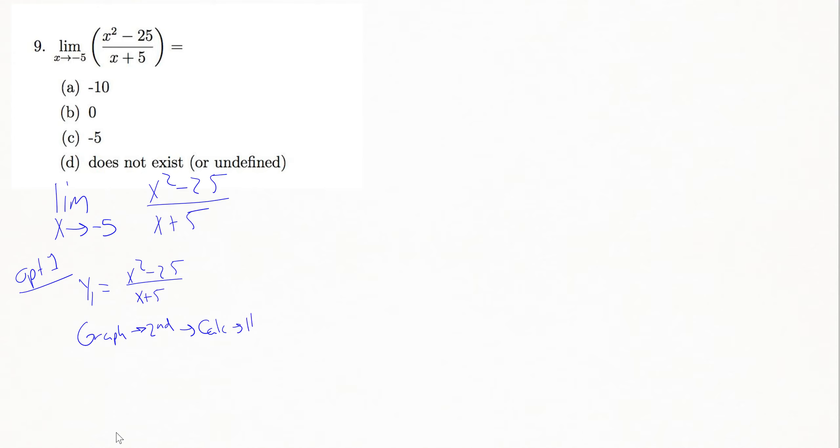I'll choose number 1 in that menu option, which is value, and the value will be the x value I care about, which is the value we're approaching, so that would be negative 5 here.